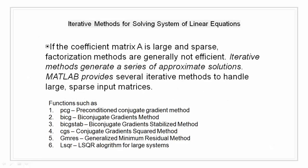Iterative methods for solving systems of linear equations. If the coefficient matrix A is large and sparse, factorization methods are generally not efficient. Iterative methods generate a series of approximated solutions. Several methods can handle such large matrices: PCG (preconditioned conjugate gradient method), appropriate for Hermitian positive definite coefficient matrices; BICG (bi-conjugate gradient method); BICGSTAB (bi-conjugate gradient stabilized method); conjugate gradient squared method; generalized minimum residual method; and the LSQR method.